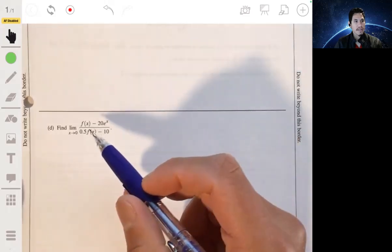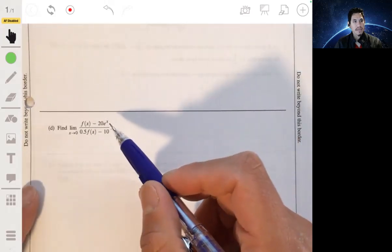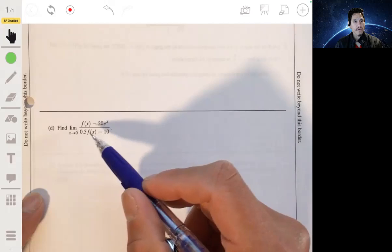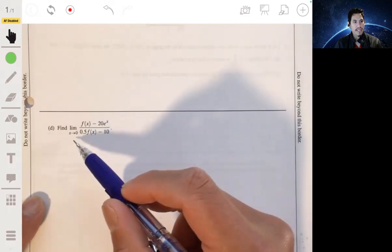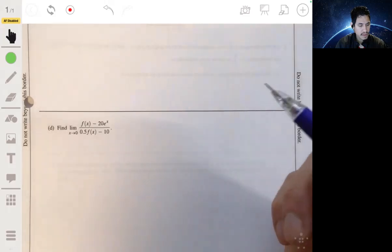Alright, in part D, find this limit. It's f of x minus 20 e to the x over 0.5 f of x minus 10 as x goes to 0.